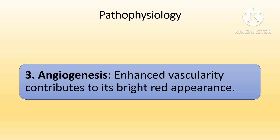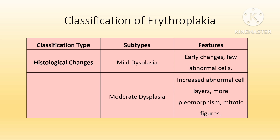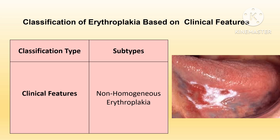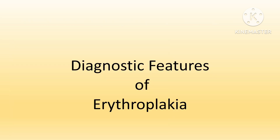Erythroplakia is primarily classified on the basis of histological severity and degree of dysplasia. Categories include mild, moderate, and severe dysplasia, as well as carcinoma in situ and invasive carcinoma where malignant transformation has occurred. On the basis of clinical features, erythroplakia is classified as homogenous or non-homogenous. Homogenous erythroplakia presents as a smooth, velvety red lesion without fissure or ulceration, while non-homogenous erythroplakia has an irregular, patchy appearance, sometimes ulcerated, and carries a higher risk of malignant transformation.